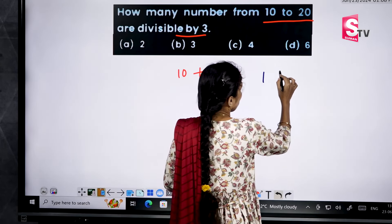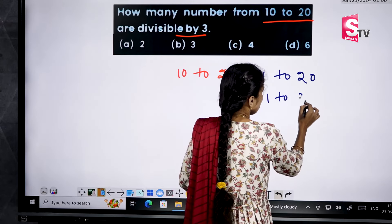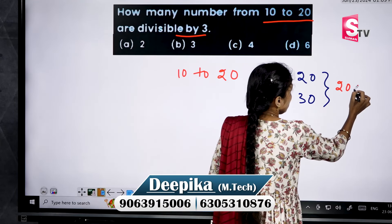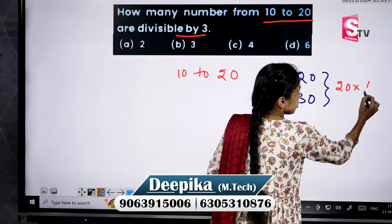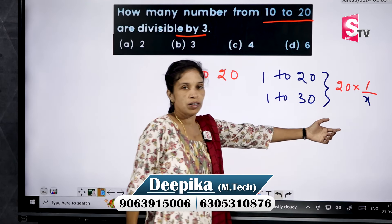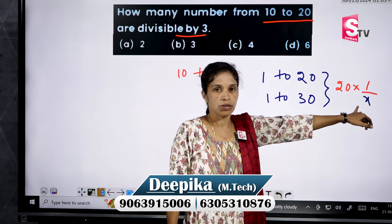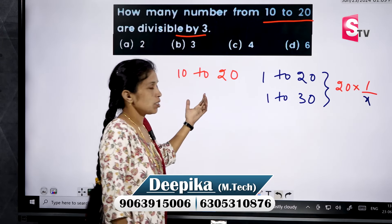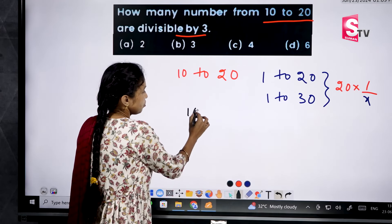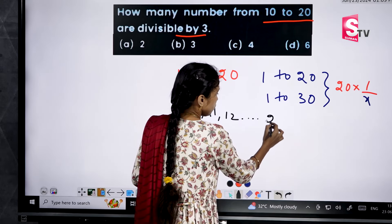For this question, since the range is 10 to 20 and not starting from 1, we need to use a different approach. We will divide this question into two parts: first find 1 to 9, then find 1 to 20. Write down the numbers 10, 11, 12 and so on up to 20.